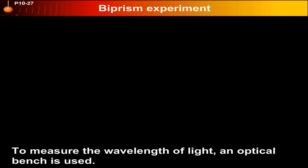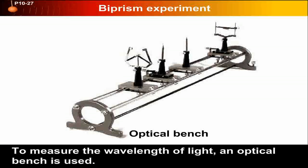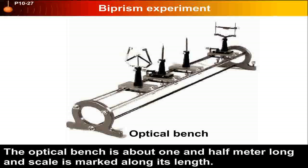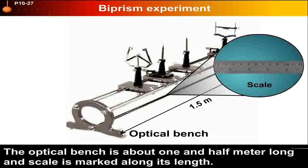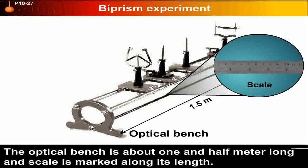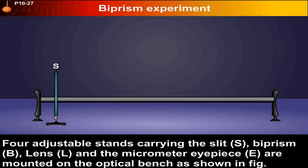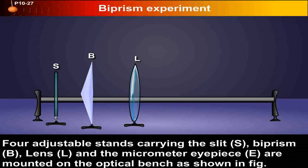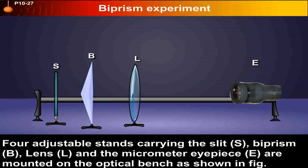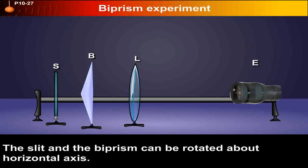Bi-prism experiment to measure the wavelength of light. An optical bench is used, about one and a half meters long with a scale marked along its length. Four adjustable stands carrying the slit S, bi-prism B, lens L, and micrometer eyepiece E are mounted on the optical bench as shown. The slit and the bi-prism can be rotated about a horizontal axis.